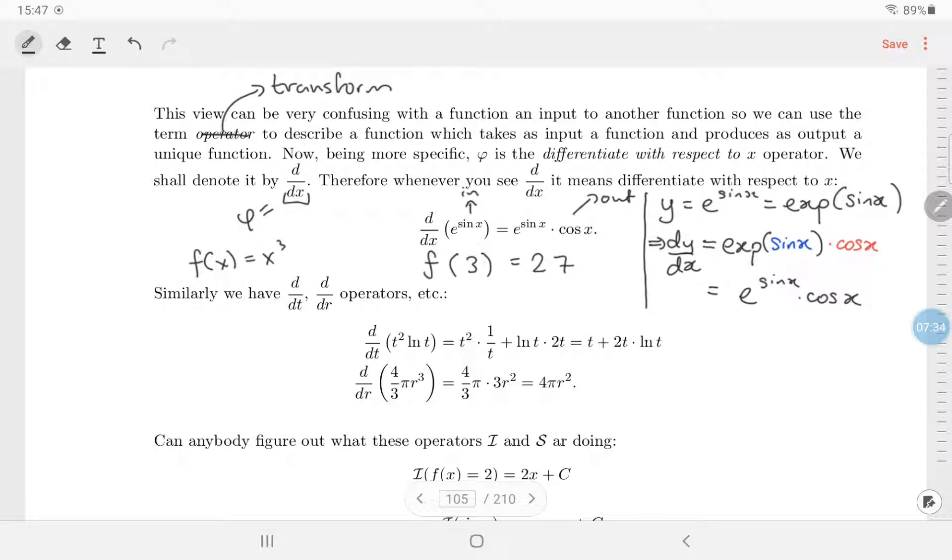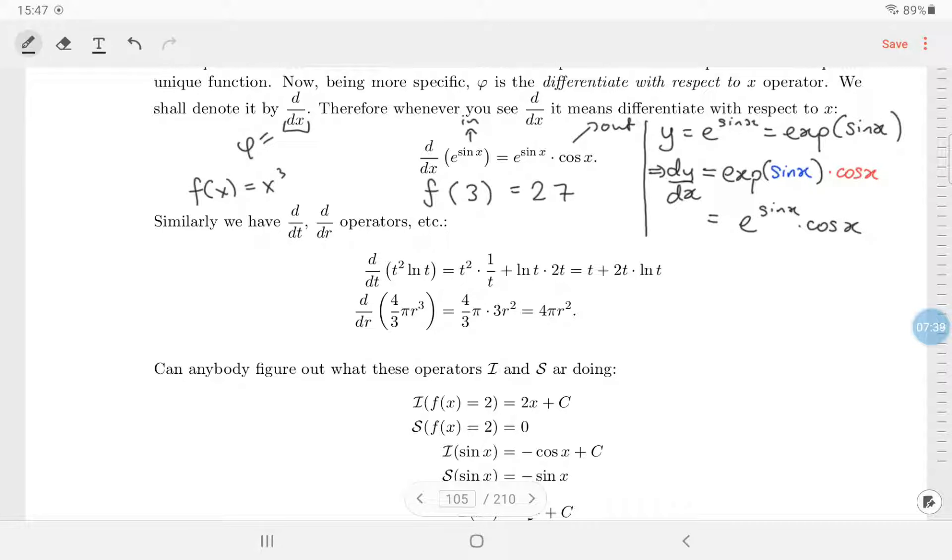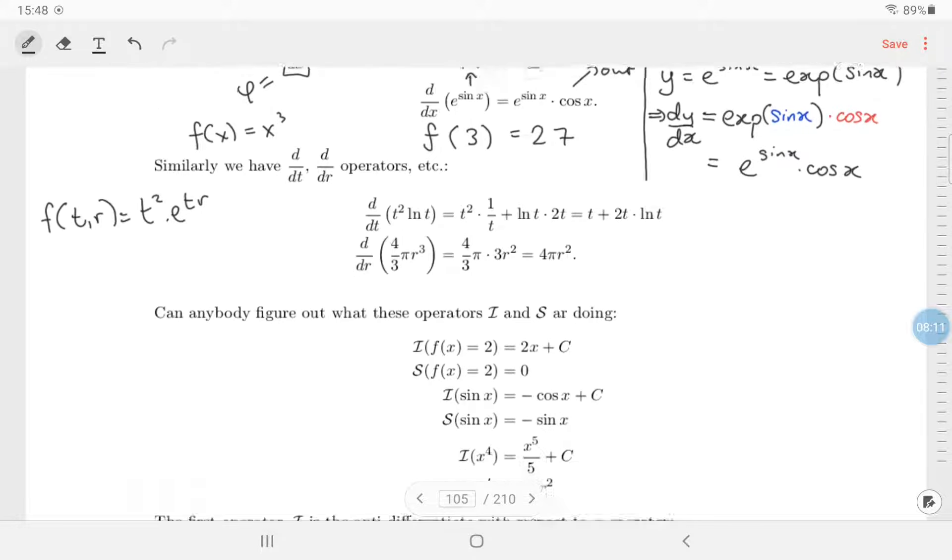Similarly you can have differentiate with respect to t, differentiate with respect to r. You might say well it's not going to be obvious, but later on what's going to happen is when our functions of two variables, so what if you had a function for argument's sake of t and r, so t squared times e to the tr, two numbers in one number out. You can't just say differentiate because you're going to say am I differentiating with respect to t or respect to r, and what does that mean? We'll talk about that in later weeks.